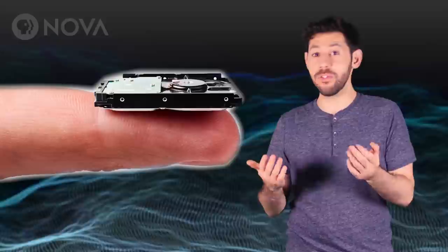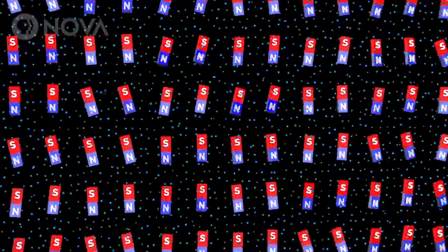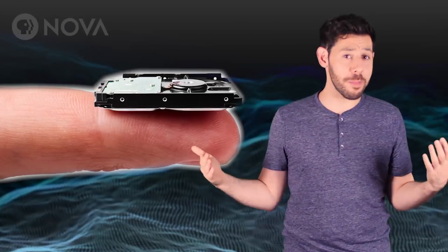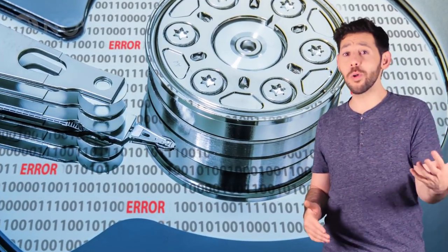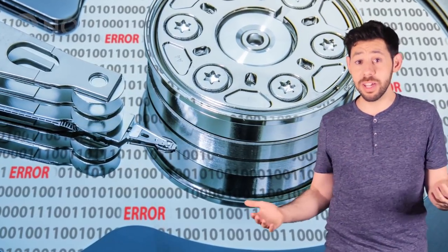If you tried to make a hard drive with even smaller magnets than we currently use, then that flipping over could occur at room temperature fairly quickly, and they could lose their information in a matter of days. Current hard drives can only hold information for about 200 years.